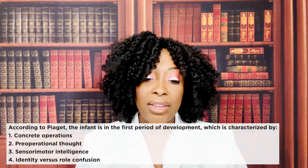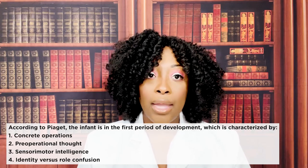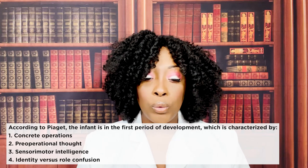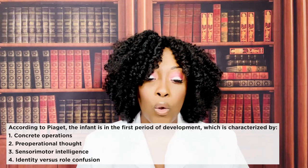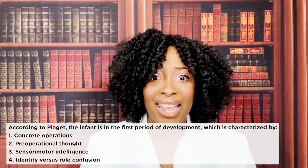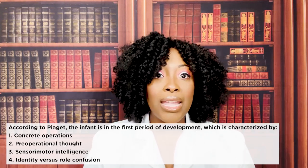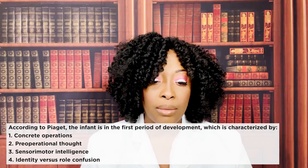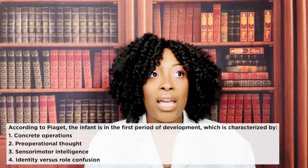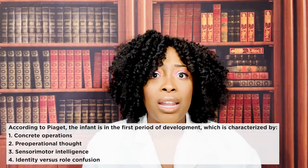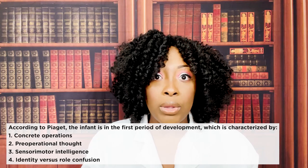According to Piaget, the infant is in the first period of development, characterized by one, concrete operations; two, pre-operational thought; three, sensorimotor intelligence; or four, identity versus role confusion. The correct answer is three, sensorimotor development. They gave you a hint: according to Piaget, the infant. From infancy to about two years, they're learning about their environment through their senses.